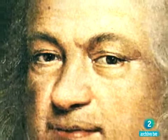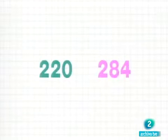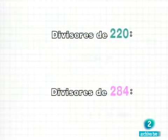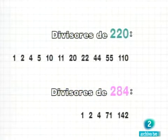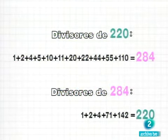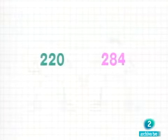Con esta mente para los cálculos, Euler no podía dejar de responder a los retos del matemático francés Fermat, planteados un siglo antes. Los pitagóricos ya habían observado una rara relación entre los números 220 y 284. Si sumamos todos los divisores de 220, obtenemos 284, el segundo número. Y si sumamos los de 284, obtenemos el primero, 220. Los llamaron números amigos.